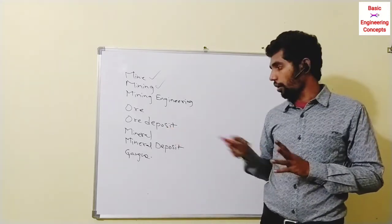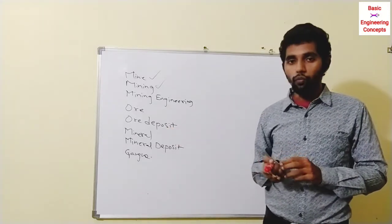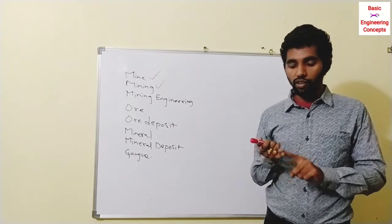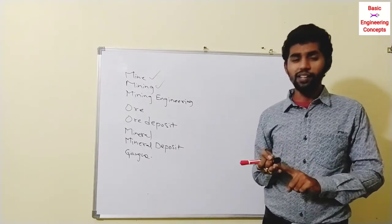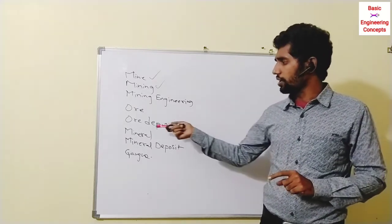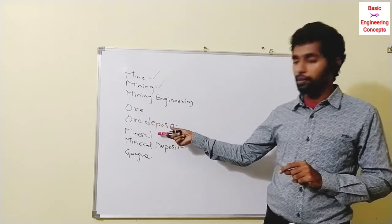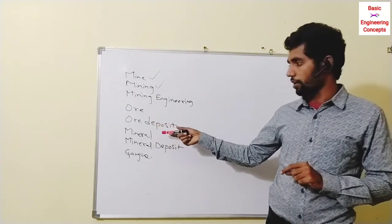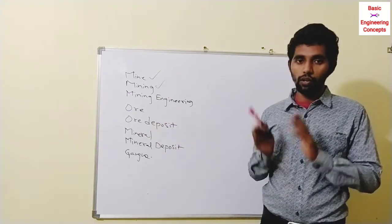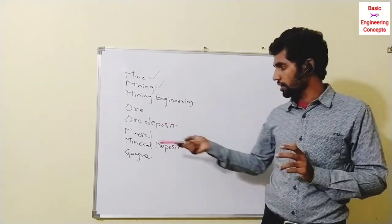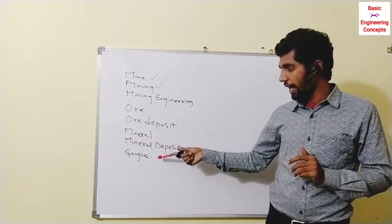When it comes to 'mineral,' a mineral is a composition or particle which consists of different physical properties and chemical composition. There are different parameters that we use to characterize a mineral deposit.